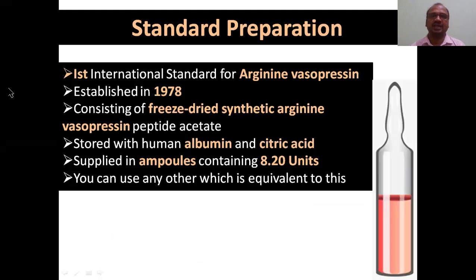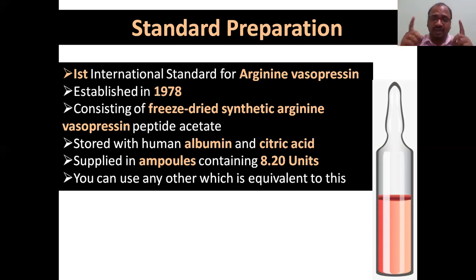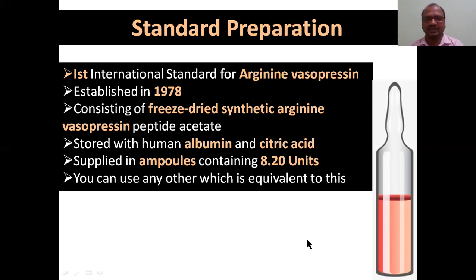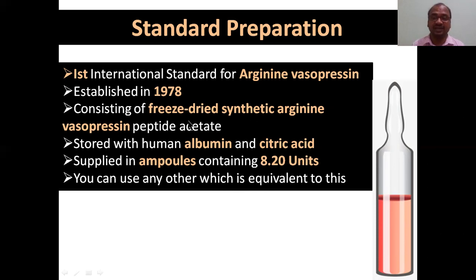The standard preparation is the First International Standard. Its name is arginine vasopressin, established in 1978. You have to compare your test preparation only with this one. It is supplied in ampoules with various preservatives and proteins like albumin and citric acid. Each ampoule consists of 8.2 units. It is a freeze-dried synthetic arginine vasopressin — freeze-dried means dried in the fridge by sublimation.